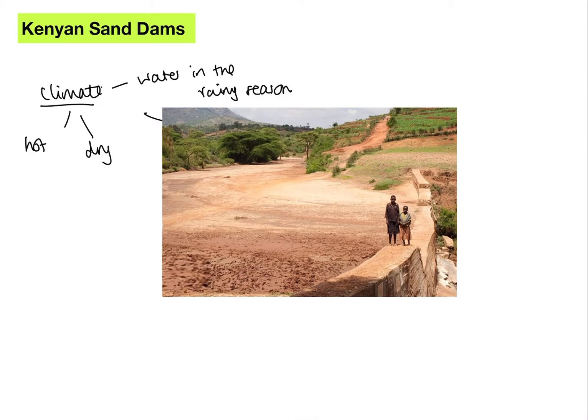Storing this water all year round is quite tricky, but the solution that local people have come up with is incredibly sustainable. The exam board wants us to explain exactly why this is a sustainable solution. What you can see in the photograph is this one-meter-high dam. The whole purpose of this is it makes sand get deposited behind it — as our river slows down flowing over the top, that sand is going to get deposited behind it as the speed decreases.